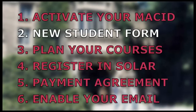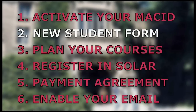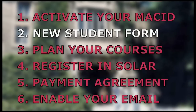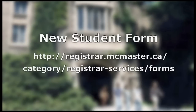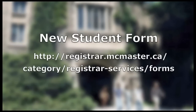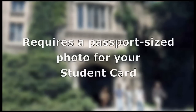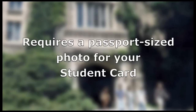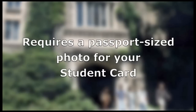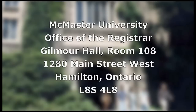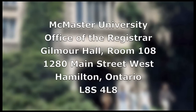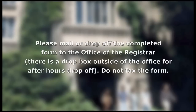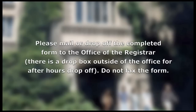Step 2 in the registration process is to fill out and submit a new student form. The form should have been included in your acceptance package. If not, you can go to the URL on your screen, download the form, and print it off yourself. The form requires you to attach a passport-sized photo of yourself — this photo will be used for your student card. It is not required to be an official passport photo, just passport-sized. Once completed, mail or drop off the form to the Office of the Registrar. If you drop off the form when the office is closed, you can use the drop box located just outside of the office.